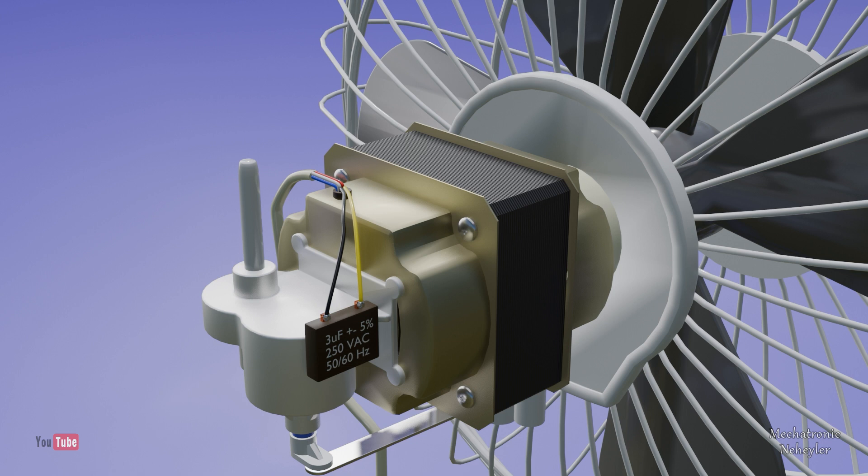To solve this problem then you must change the capacitor. This must take into account that it is of the same capacitance and voltage and frequency values. In this case, it tells us that this capacitor is 3 microfarads with an error of plus or minus 5 percent, and that it can be powered with up to 250 volts in alternating current with a frequency of between 50 and 60 hertz.